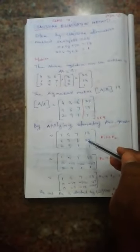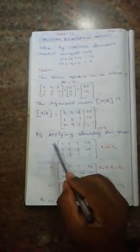By applying elementary row operations, the augmented matrix [A|B] should be written in echelon form. The first condition for echelon form is that the first element of the first row should be 1. Since the first element of the first row is 4 and the first element of the second row is 1, we interchange R1 and R2. After interchange: R1 = [1, 5, 7, 13], R2 = [4, 3, 6, 25], R3 = [2, 9, 1, 1].